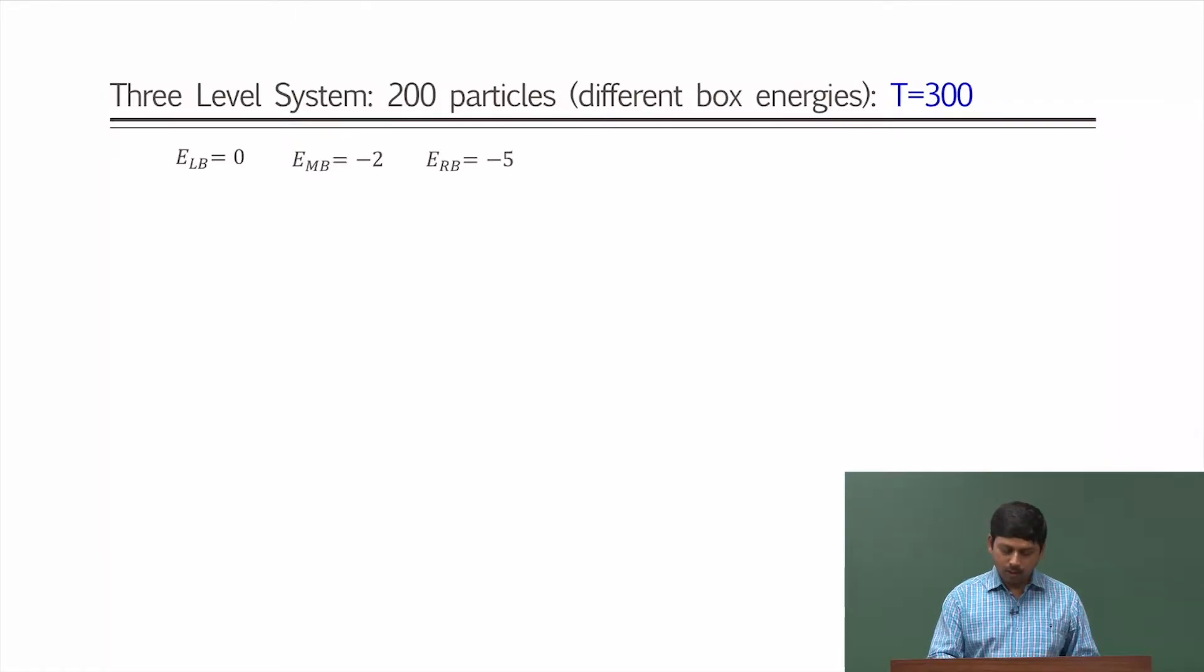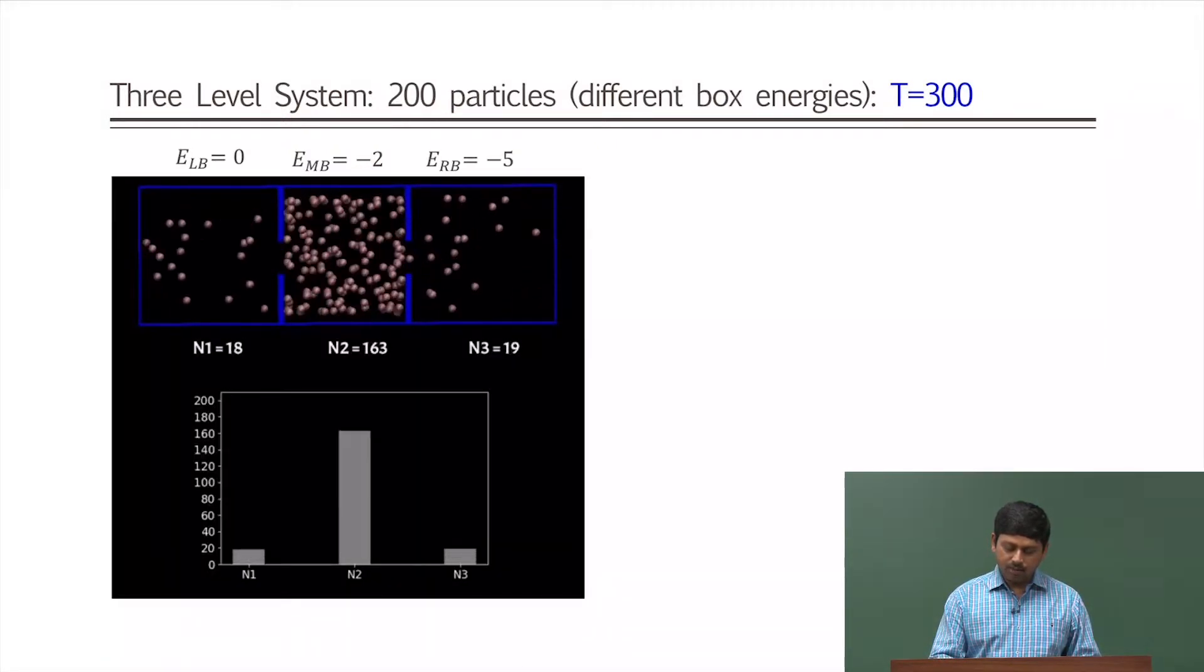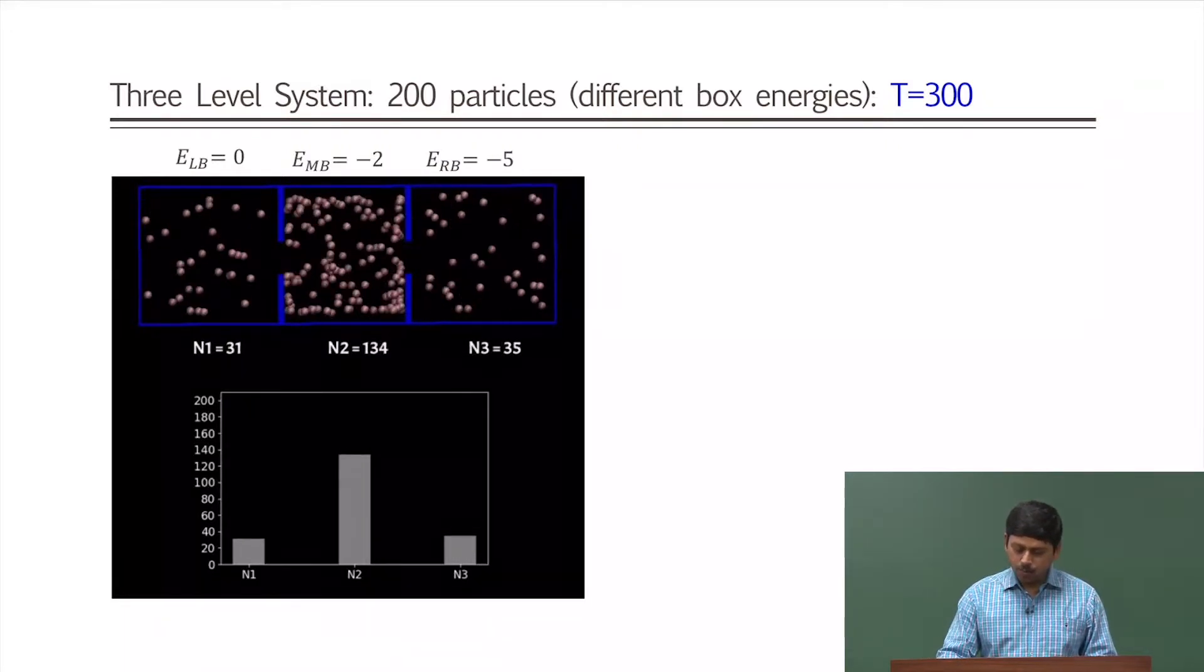So here there are three boxes. One box is having 0 energy, another is minus 2, another is minus 5. And you see initially the particles all start from the middle and they get distributed in other two boxes.